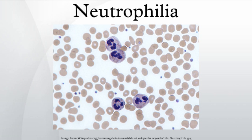A left shift refers to the presence of increased proportions of younger, less well-differentiated neutrophils and neutrophil precursor cells in the blood. This generally reflects early or premature release of myeloid cells from the bone marrow, the site where neutrophils are generated.